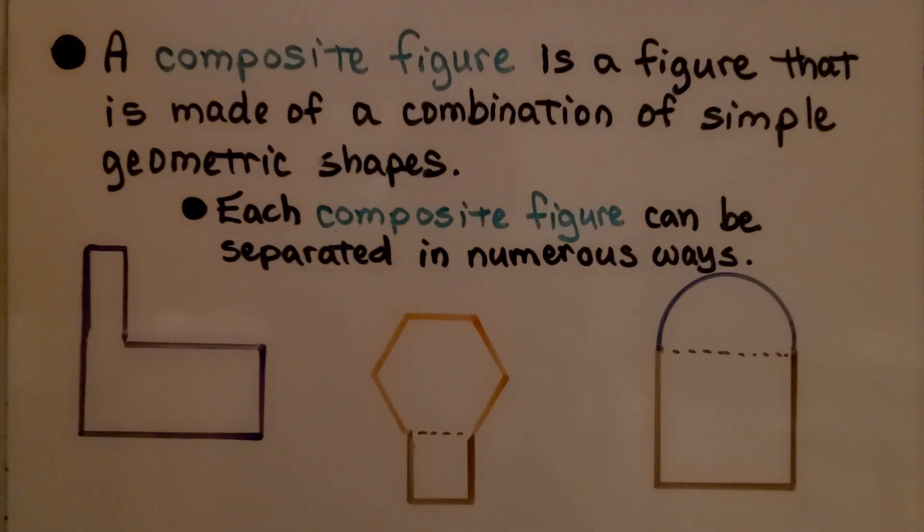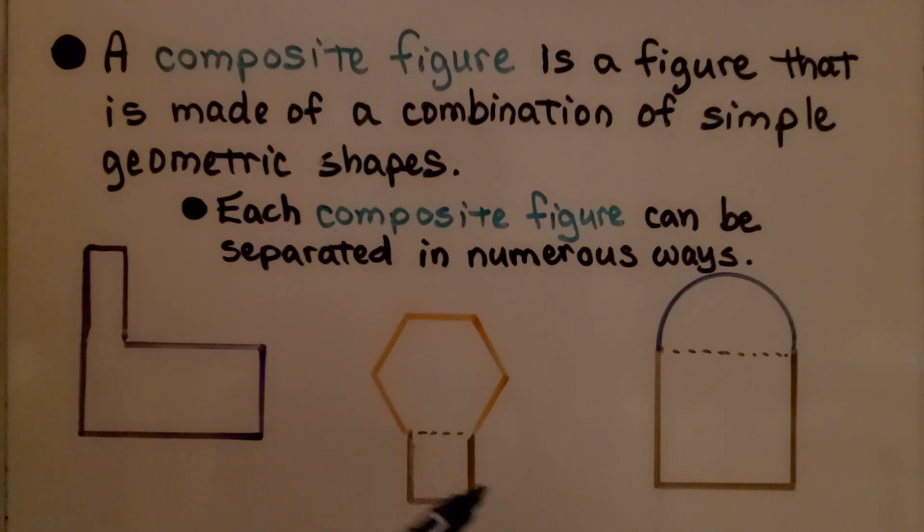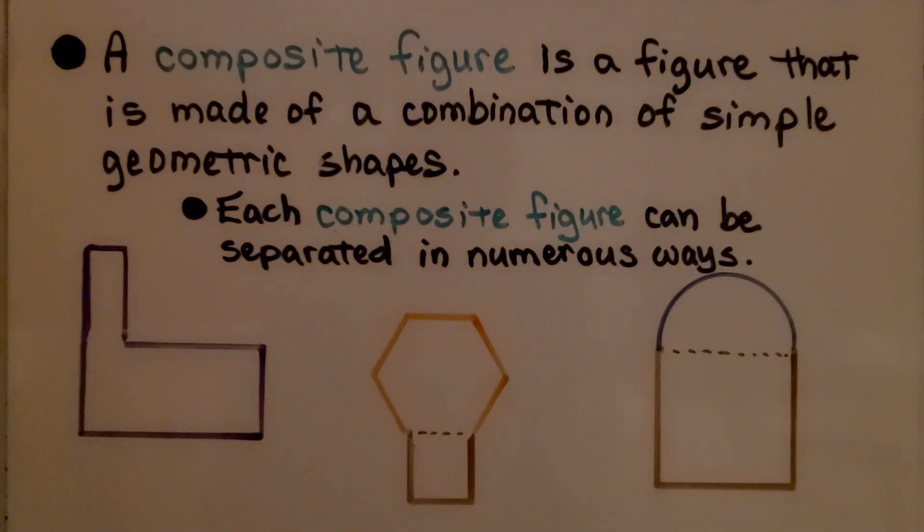Each composite figure can be separated in numerous ways. This is kind of L-shaped. Here, it looks like we have a hexagon on top of a square. Here, it looks like we have a square that is topped by half of a circle. We could split this into two rectangles, couldn't we?